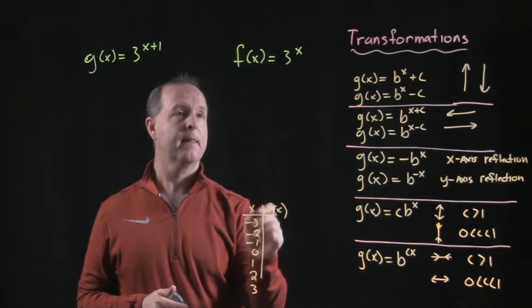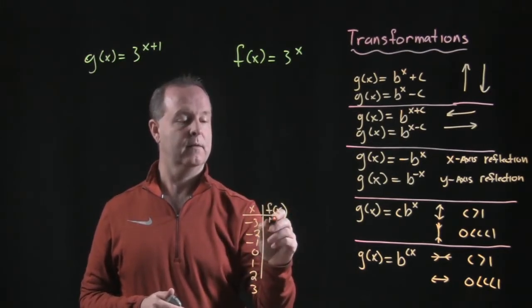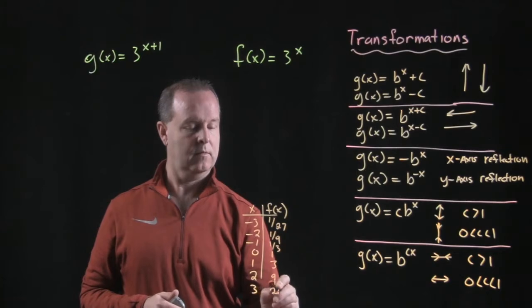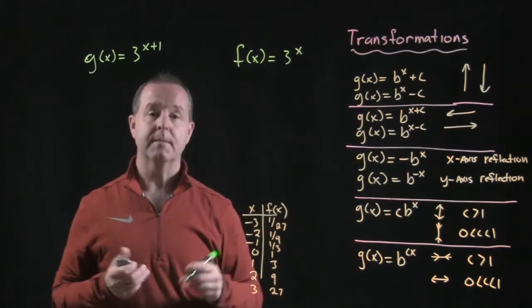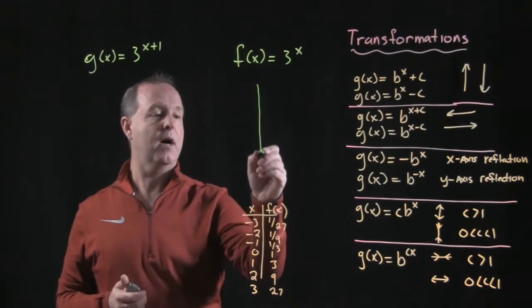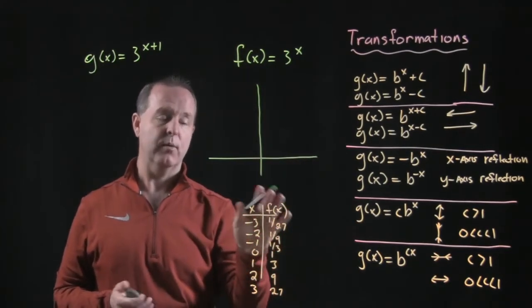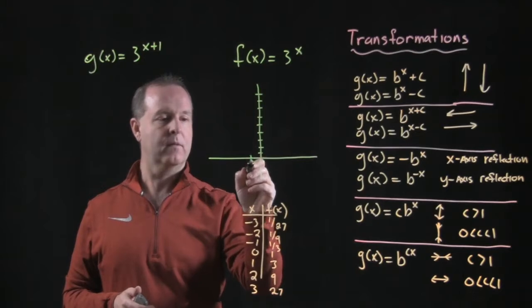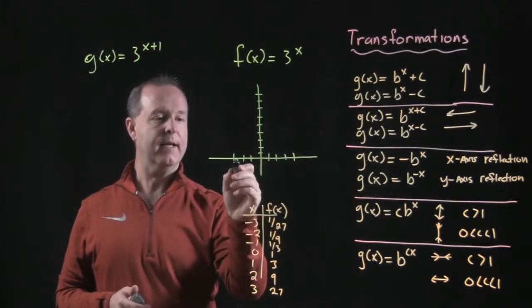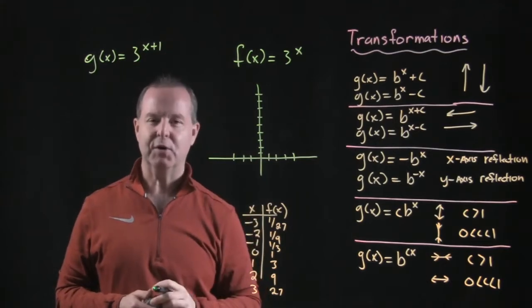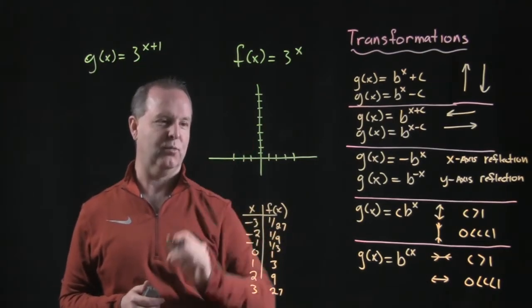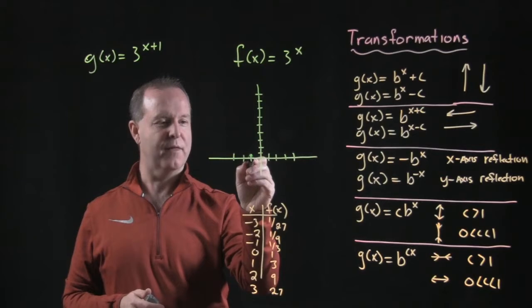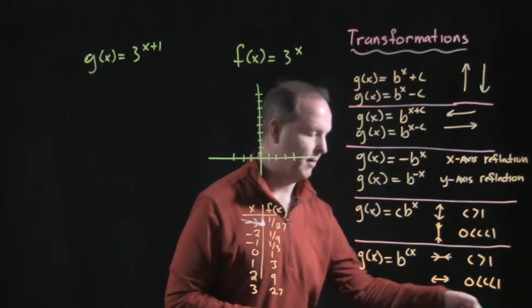Negative 3, 1 over 27th. I probably should have chose threes there. Those are too small or too large to graph on this little one. So let's look at negative 2. Negative 2 is 1/9th. Negative 1 is 1/3rd. I got to do that blue. I can't even see them at all. Let's try again.